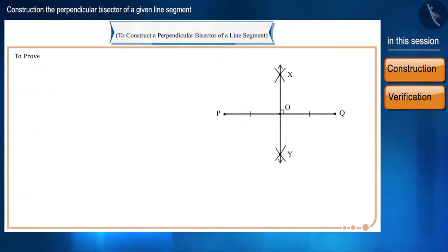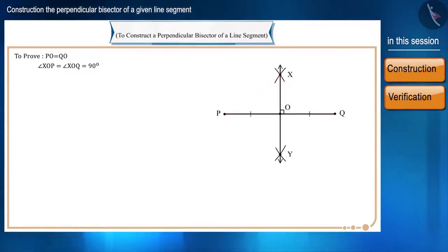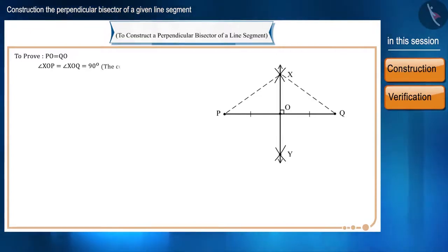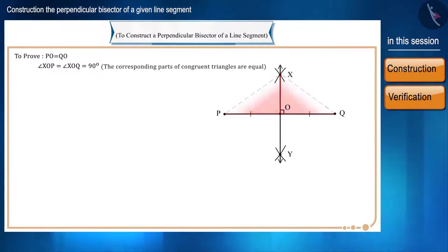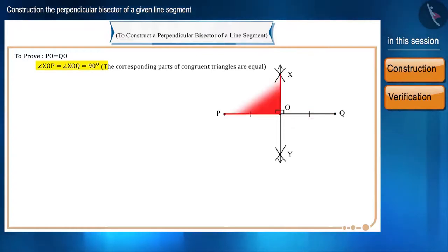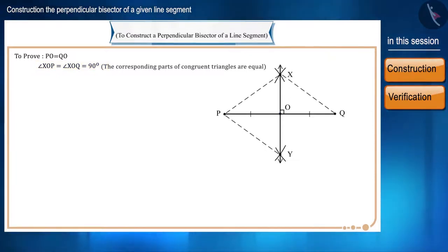We will prove that PO equals OQ, and that angle XOP equals angle XOQ equals 90 degrees. If we prove triangles XOP and XOQ congruent, then since the corresponding parts of congruent triangles are equal, we can conclude that PO equals QO and the angles are 90 degrees. For that, we first take triangle XPY and triangle XQY by joining PX, PY, QX, and QY.